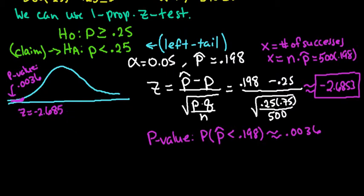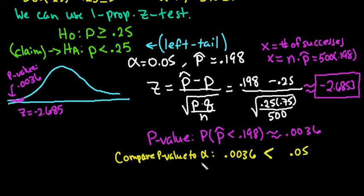So now to make our decision, what we are going to do is we are going to compare the P value to alpha. So I have 0.0036 compared to my alpha of 0.05, and we can see that this is definitely less than 0.05, so any time that is less than, we reject the null hypothesis.